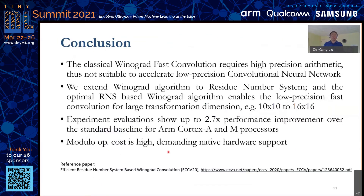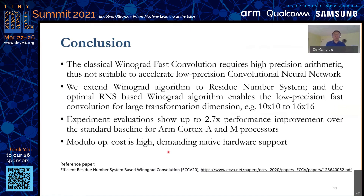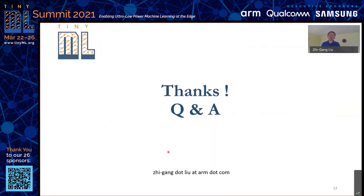The key takeaways are: classical Winograd fast convolution requires high-precision arithmetic, making it unsuitable for accelerating low-precision neural networks. We extend the Winograd algorithm to the residue number system, enabling low-precision fast convolution for larger transformation dimensions such as 10-by-10 to 16-by-16. Experimental evaluation shows up to 2.7 times performance improvement over the standard baseline on ARM Cortex-A and ARM MCU processors. Modular operation cost is high and demands native hardware support. With that, I'm ready to answer questions.